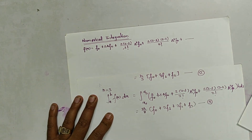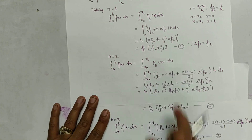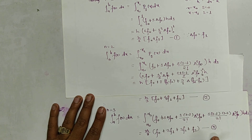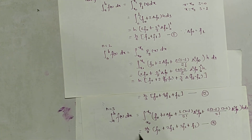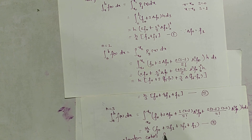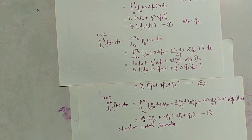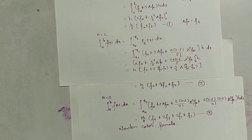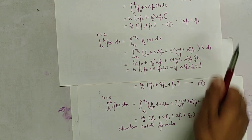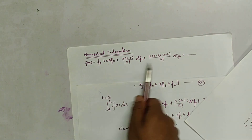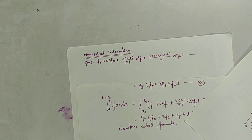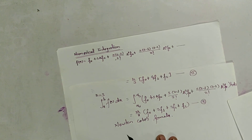Equations 1, 2, and 3 are known as the Newton-Cotes formulas. In the next video I will be deriving the formula for Boole's rule using the same interpolating polynomial. Thank you and bye bye.